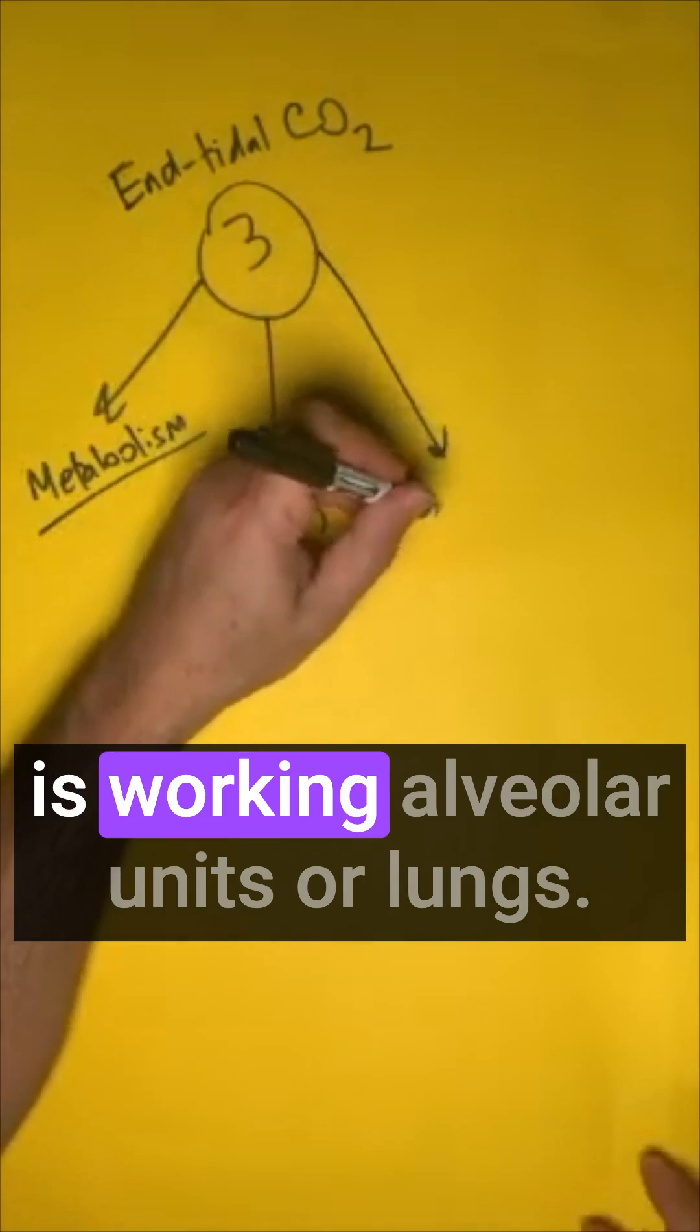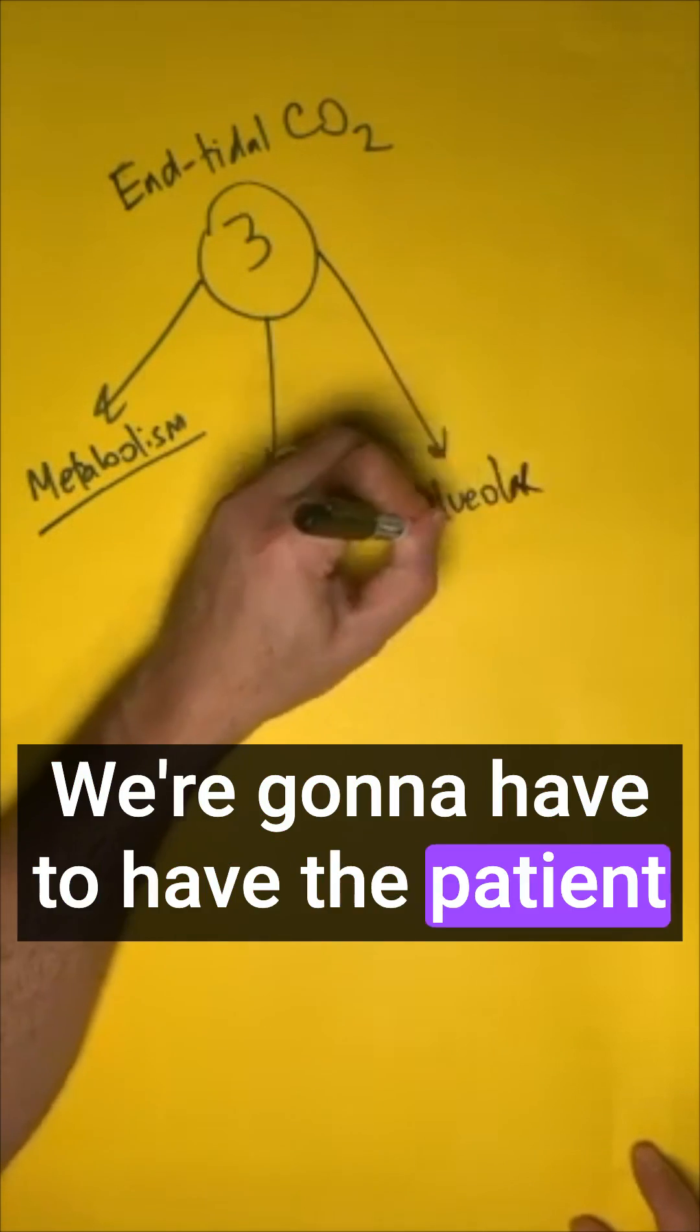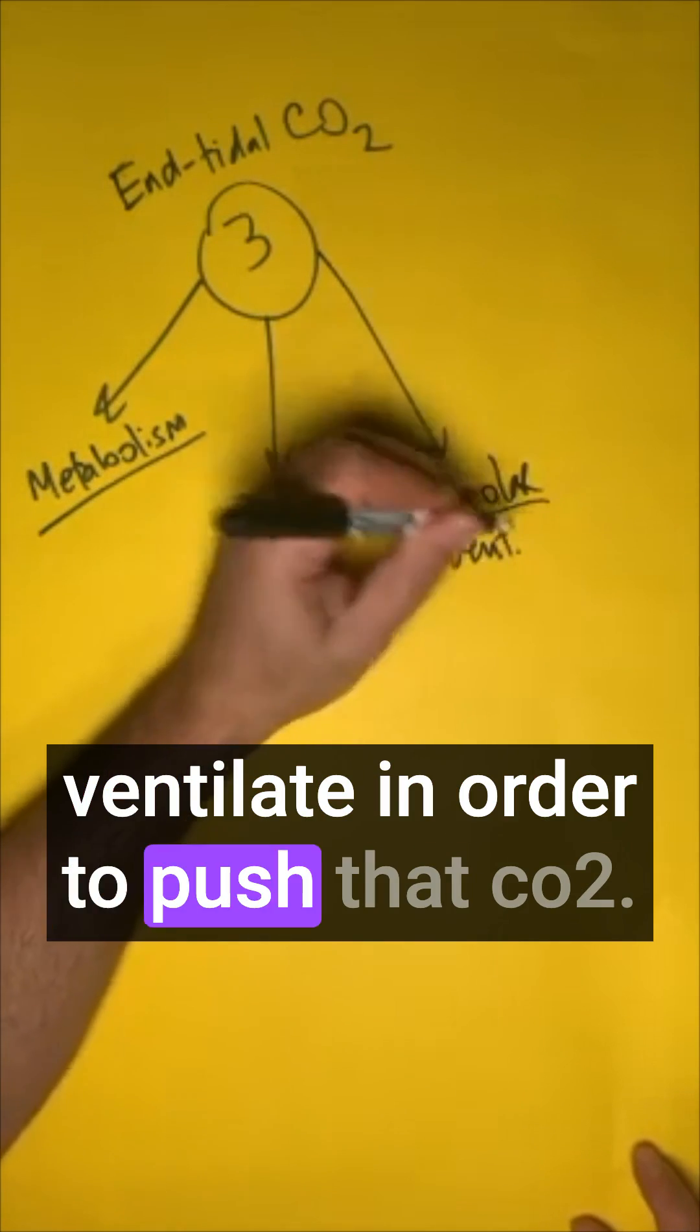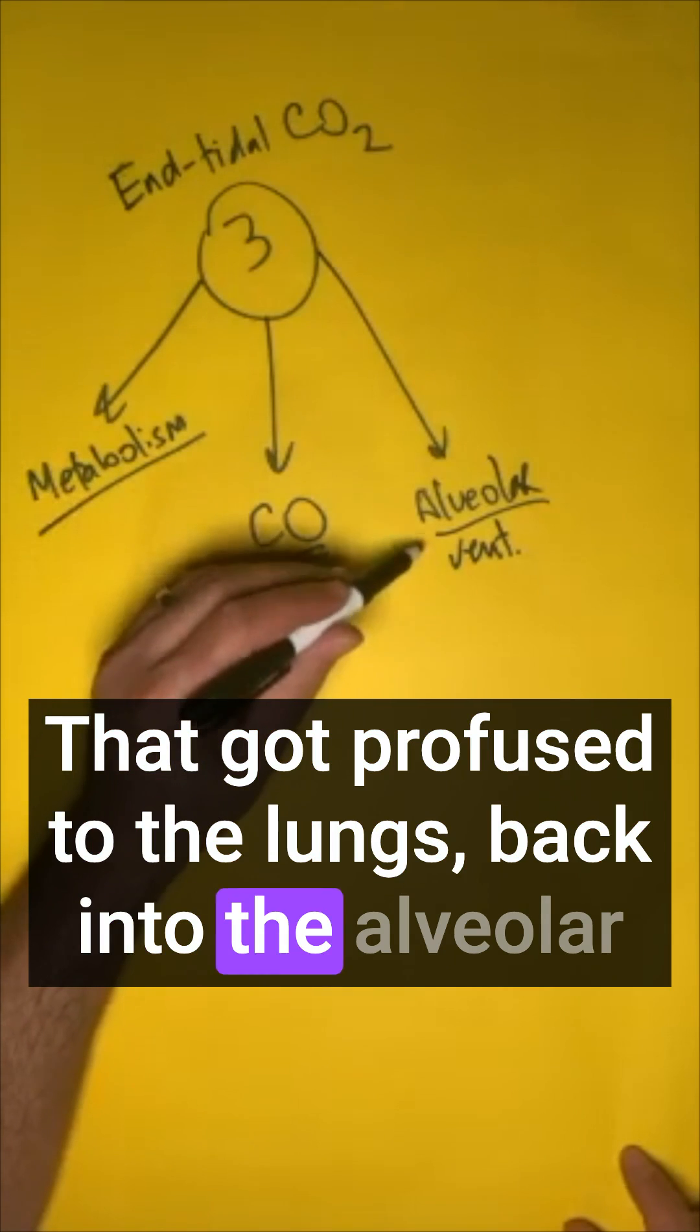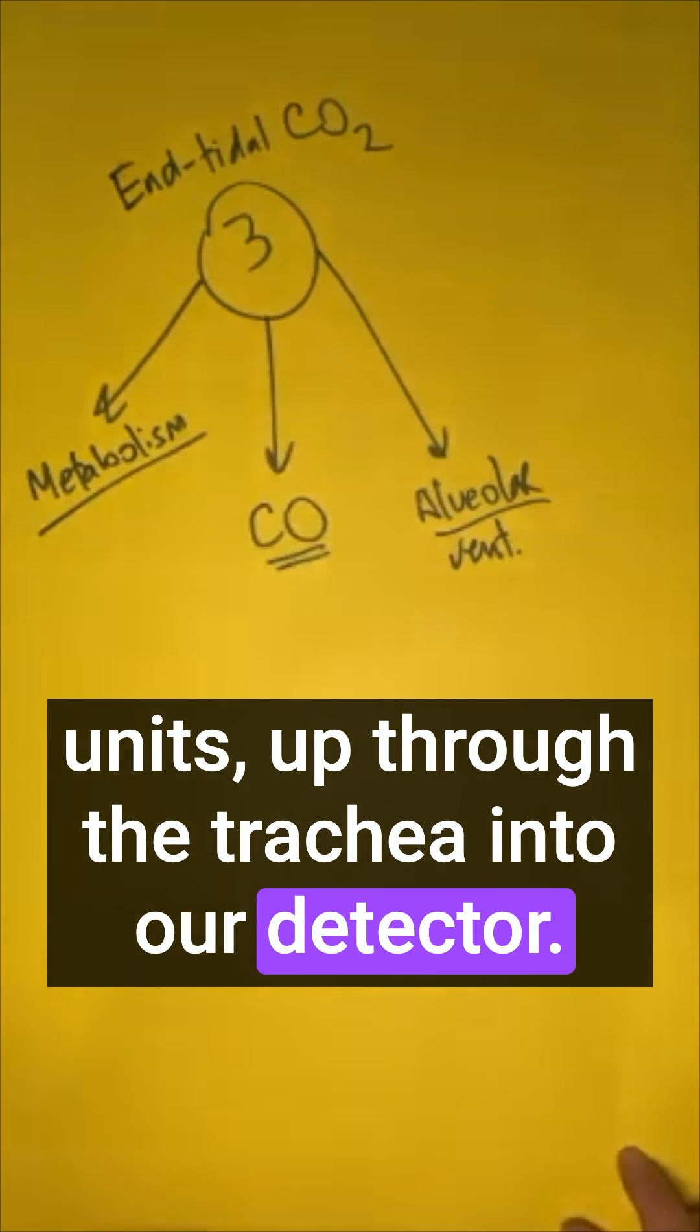And the last thing we're going to need is working alveolar units or lungs. We're going to have to have the patient ventilate in order to push that CO2 that got perfused to the lungs back into the alveolar units up through the trachea into our detector.